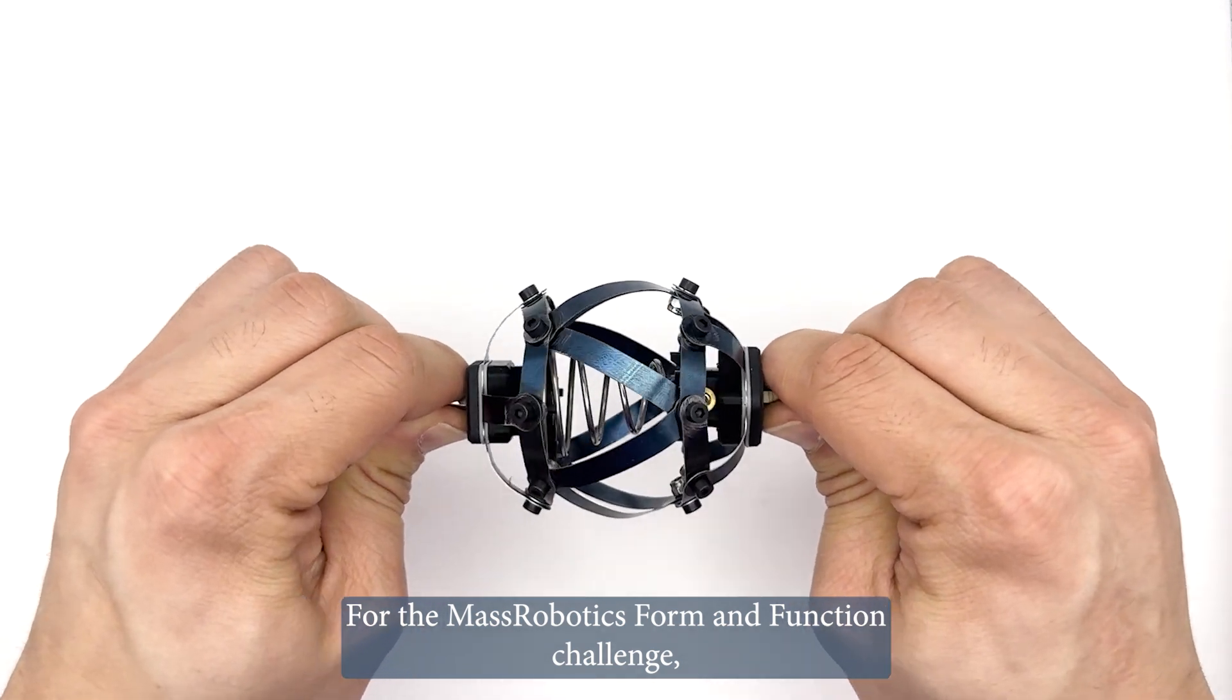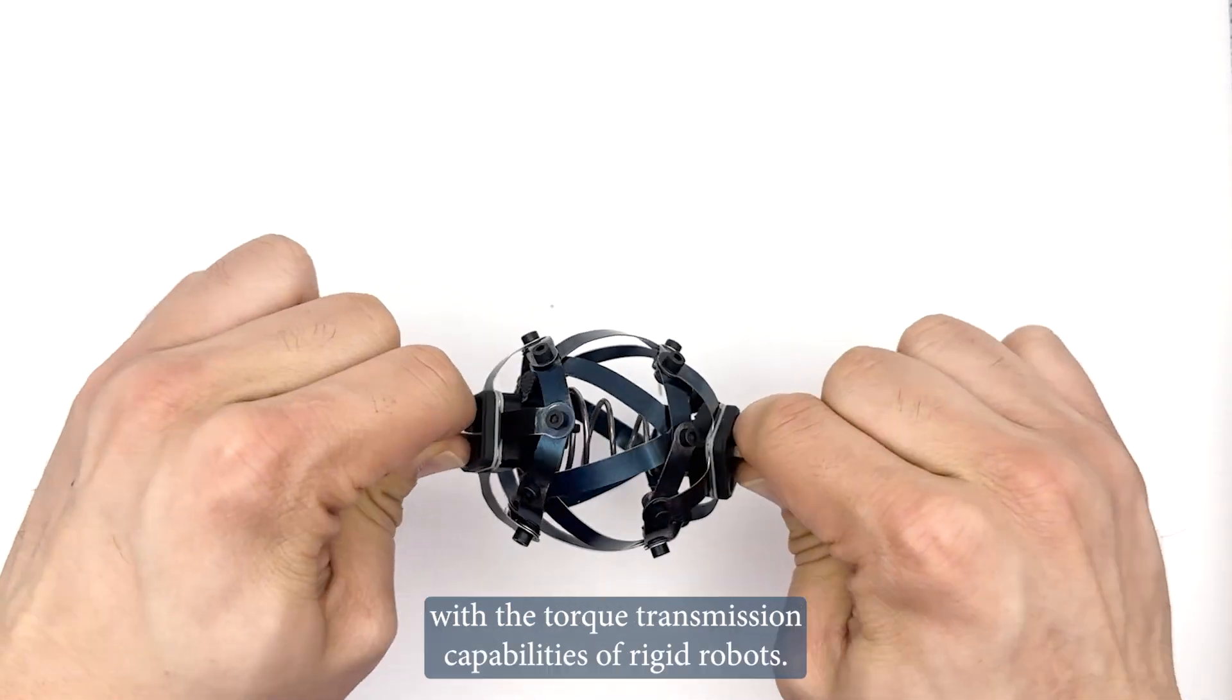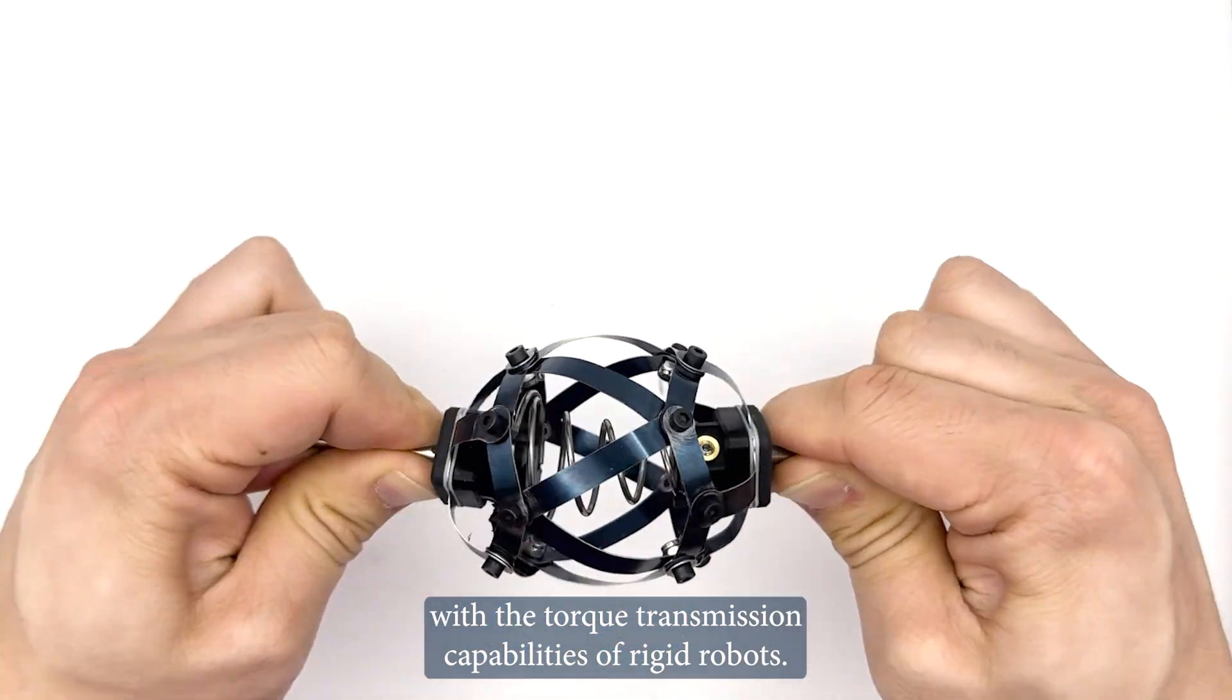For the Mass Robotics Form and Function Challenge, we combined the safety advantages of soft robotics with the torque transmission capabilities of rigid robots.